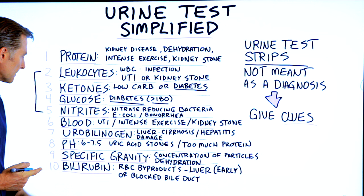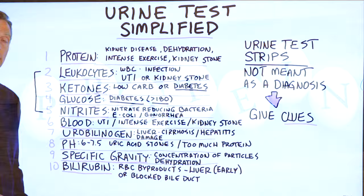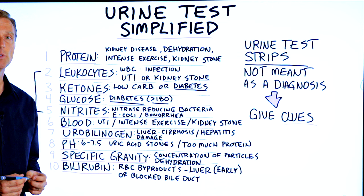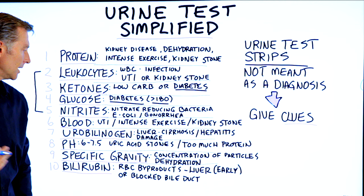Number eight is pH. The pH normally should be slightly acidic. If it's too acidic, that could mean you have too much uric acid and you're on your way to getting a uric acid stone, or that you're consuming too much protein. If it's too alkaline, your chemistry is off as well. I once saw a patient whose pH was nine — way too alkaline — and they were using one of those machines to alkalize the water, which is an unnatural process. If your pH is too far one way or the other, there are going to be some issues.